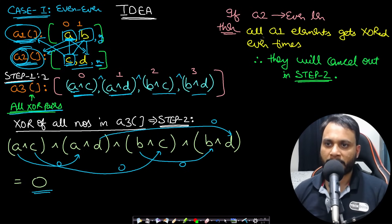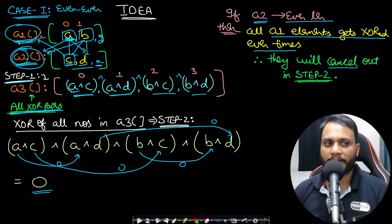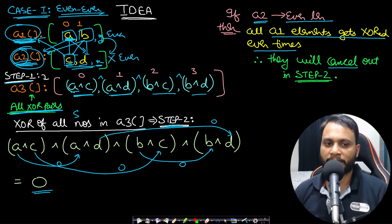So in the even-even case: if |A2| is even, all A1 elements appear an even number of times and cancel out in step 2. If |A1| is even, all A2 elements appear an even number of times and cancel out. Therefore when both A1 and A2 have even length, the answer is always 0.